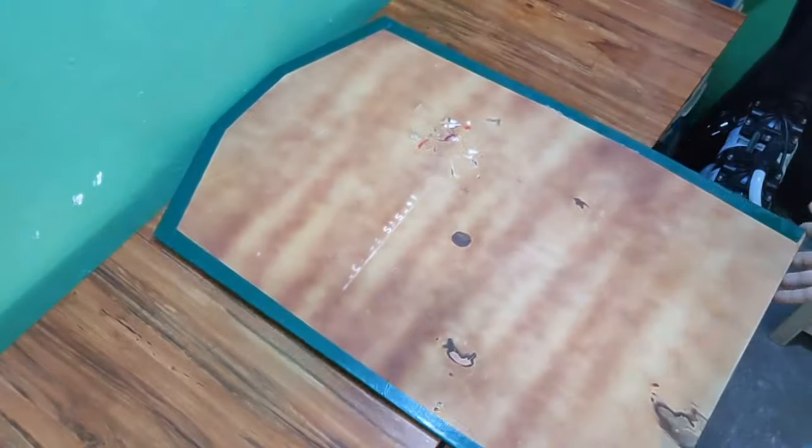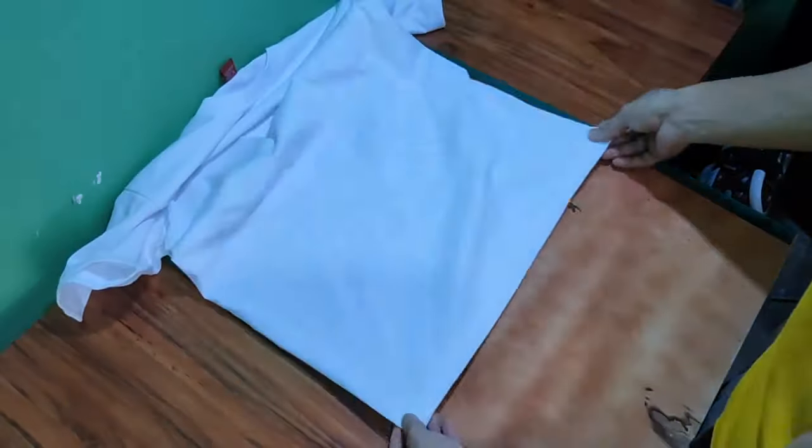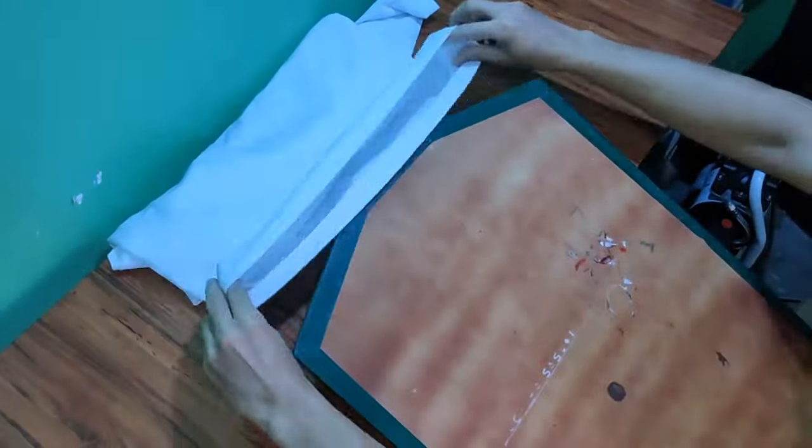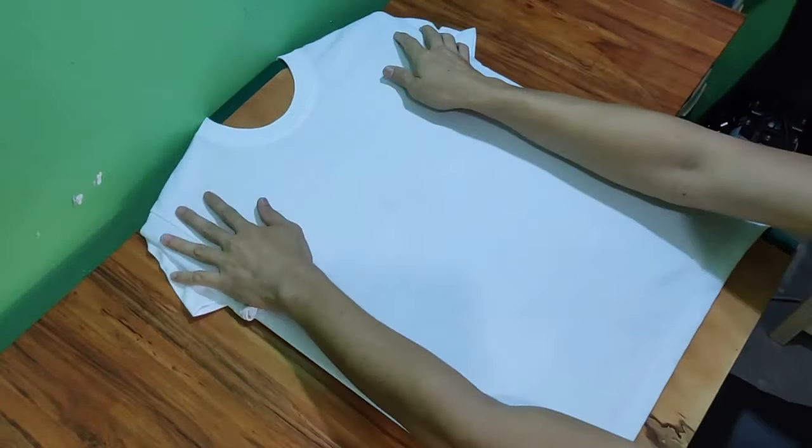Aside from the shirt, we also need a board or plywood that is slightly wider than the shirt that you are going to use. Its purpose is to stretch the shirt. If you can't have a board this size, you can use any smaller board but you will need paper clips to stretch the shirt.